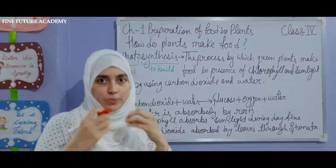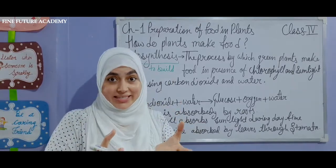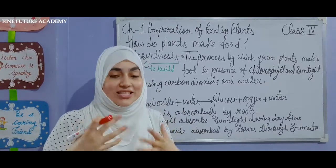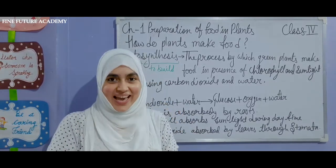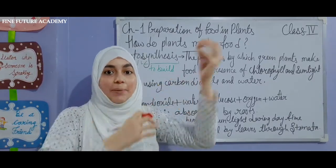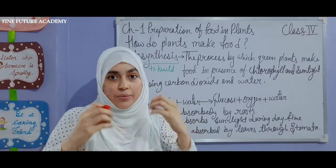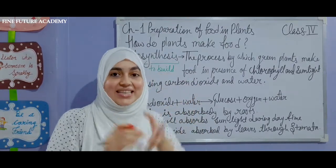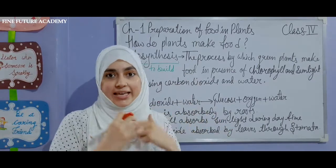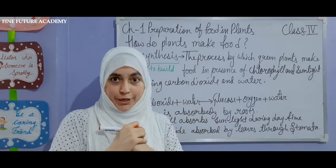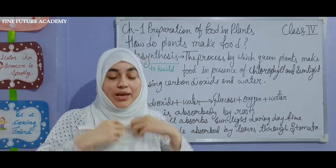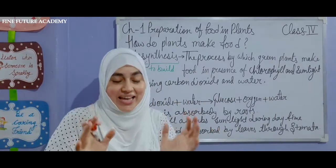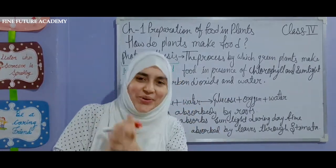Just like us — we exhale carbon dioxide and intake oxygen — plants do the opposite. The carbon dioxide that we exhale is taken in by the plants. This is a cycle: we take the oxygen produced by plants, and the carbon dioxide we breathe out is taken by leaves to make food. It is one more important ingredient.